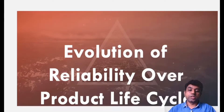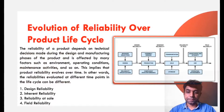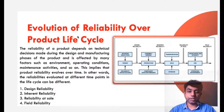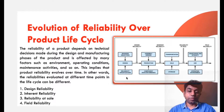Next, we need to understand the evaluation of reliability over the product life cycle. Reliability at different stages can be different for different products. The reliability of a product depends on the technical decisions made during the design and manufacturing phases. It is affected by many factors such as environment, operating condition, and maintenance activities. This implies that product reliability evolves over time — it changes over the period of time and can be evaluated at different points in time.